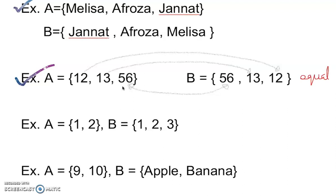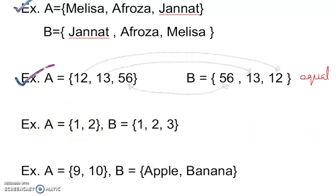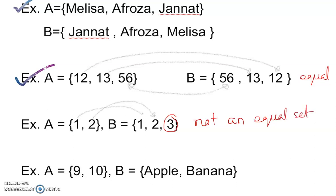Let's check the next example. The first set has {1, 2}, and I check against the second set: it has 1 and 2, but the problem is there is one extra element. Remember, we need exactly the same elements. So this is not an equal set.